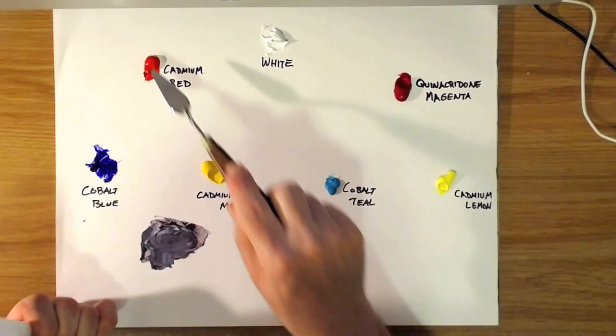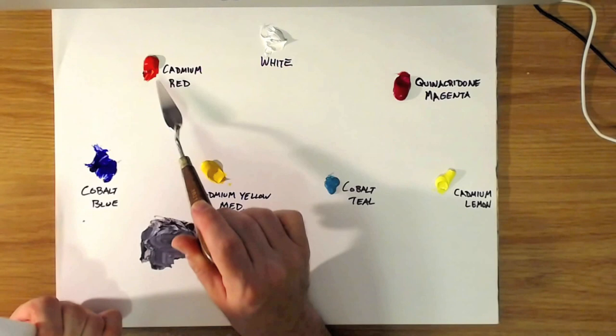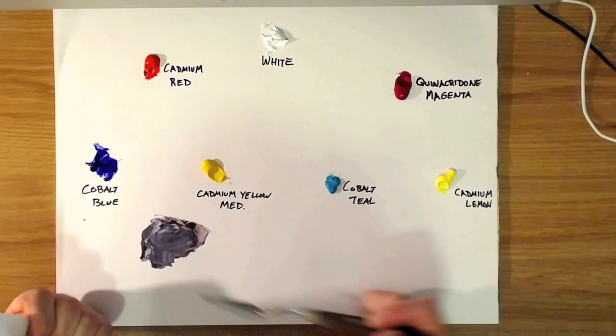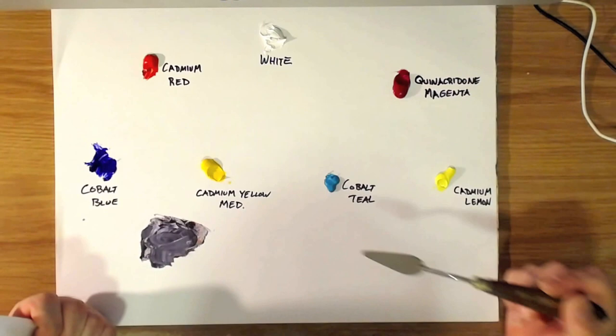Well, the reason that that happened is because these are not perfect primaries. Cadmium red actually has quite a bit of yellow in it. It's a very orangey red, which means when you mix it with the violet or the blue to make the violet, that yellow is going to dull that violet down and make it gray.